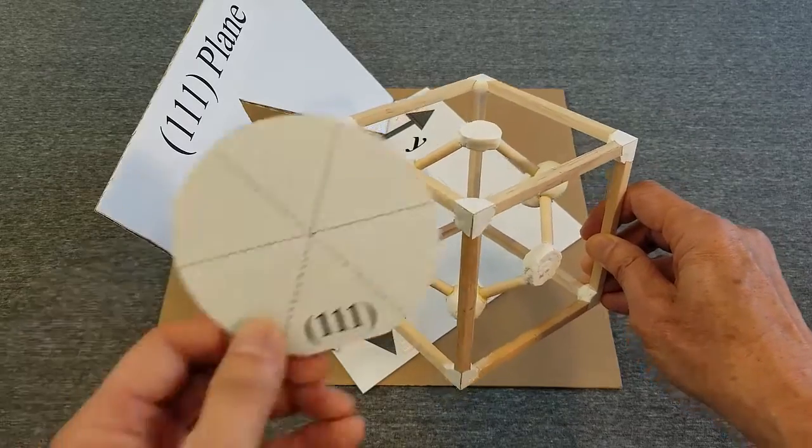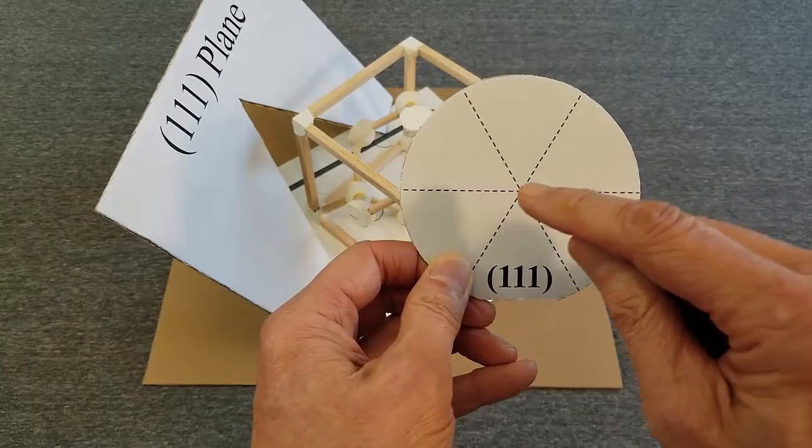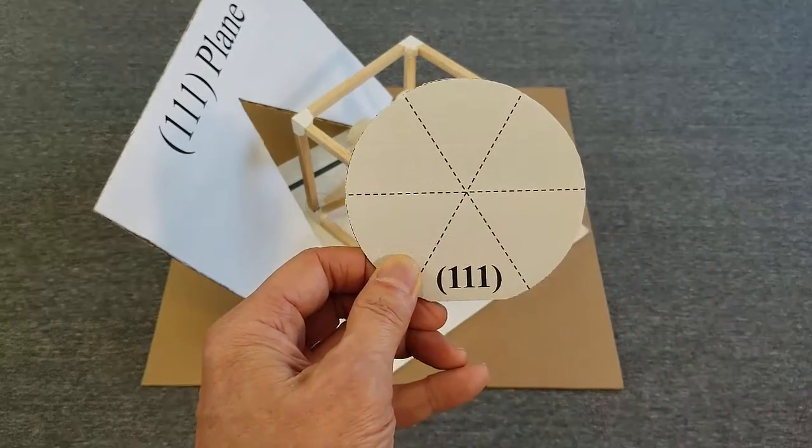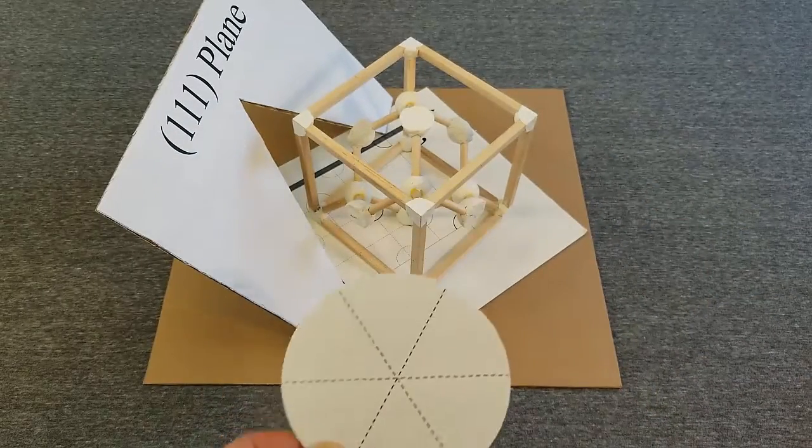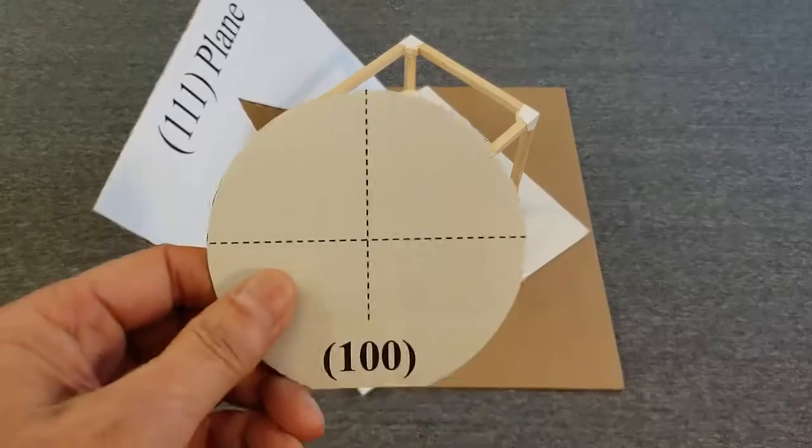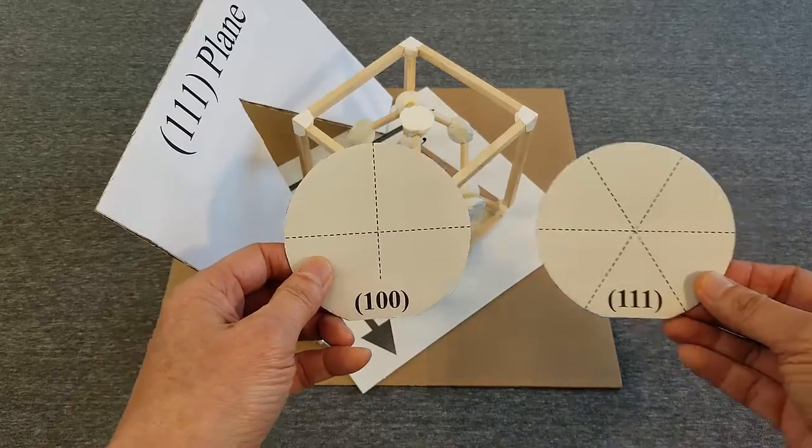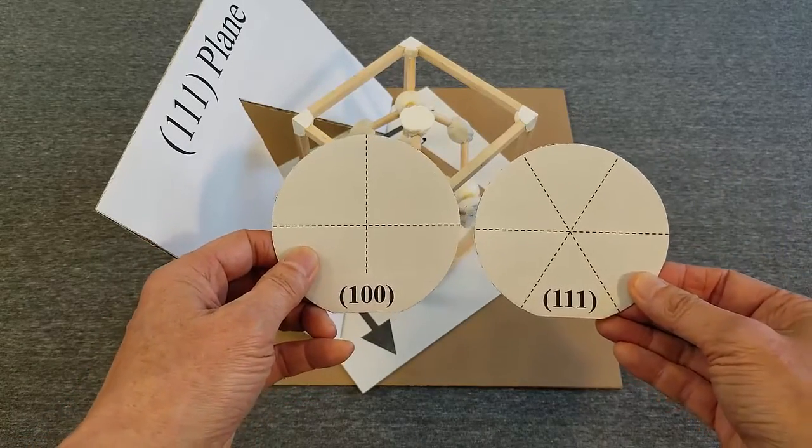If you strike a 1-1-1 wafer with a sharp object, it fractures into pieces with edges at 60 degrees. The 1-0-0 wafer orientation is the most common for CMOS integrated circuits. The 1-1-1 orientation is sometimes used instead.